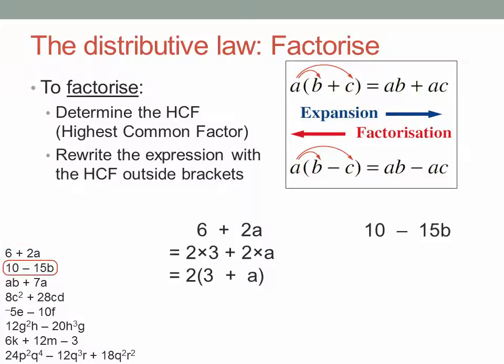10 minus 15b. What's the highest common factor? What's the largest factor that divides both 10 and 15b? It's 5. 10 is 5 times 2, and 15b is 5 times 3b. Don't forget the b. So take out the common factor of 5. 5 times brackets.